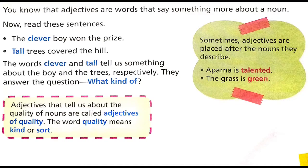As you all know, adjectives are words that say something more about a noun. Read these sentences: The clever boy won the prize. Tall trees covered the hill. Here, the words clever and tall tell us something about the boy and the trees respectively. They answer the question, 'What kind of?' The word clever tells us more about the boy and the word tall tells us more about the trees, so these can be called adjectives.